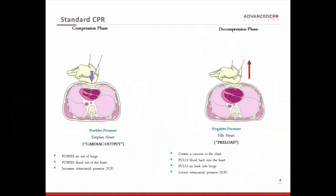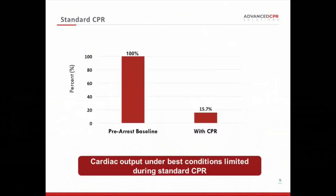During the recoil phase, shown on the right, if the chest is allowed to fully recoil, a little vacuum develops inside the thorax, and that results in pulling blood back into the heart. Because of the pressure transduction between the thorax and the brain, intracranial pressure goes down. This is the only time that the heart refills. During manual closed chest compression, this system is not very effective — you only get about 15 to 20% of normal blood flow to the heart and the brain.